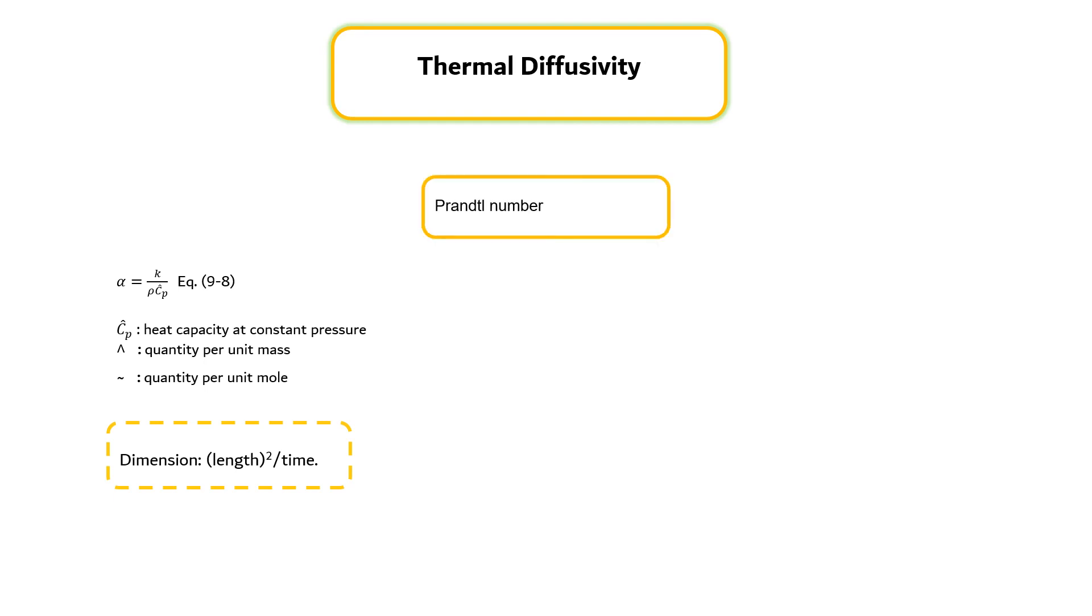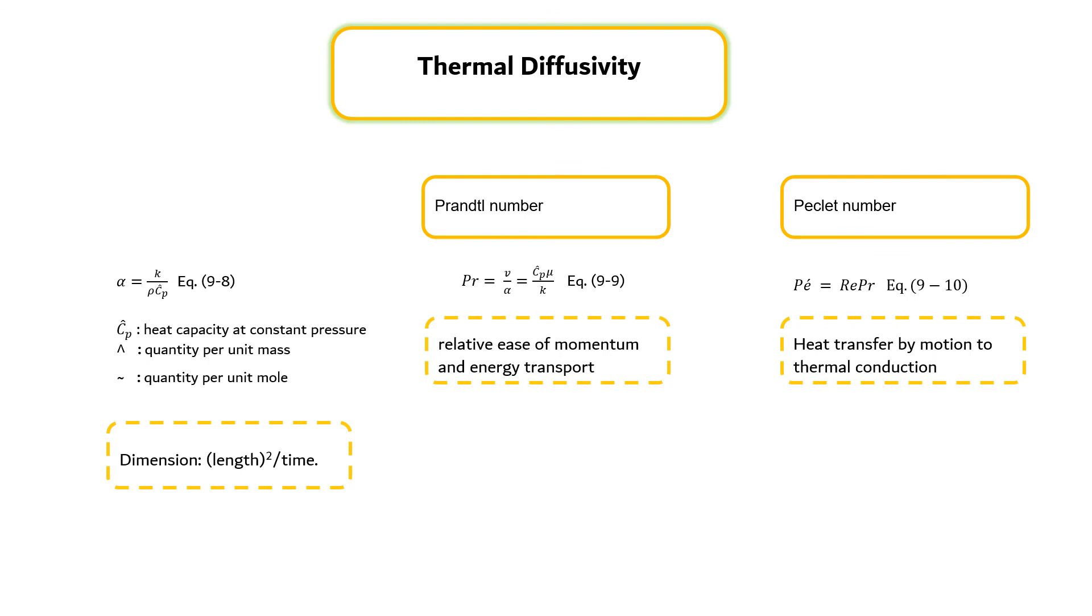Prandtl number is the ratio V and alpha, which indicates the relative ease of momentum and energy transport in flow systems and can be expressed as a dimensionless ratio as shown in equation 9.9. Another dimensionless group that is relevant when discussing heat transfer is the Peclet number, which can be calculated by equation 9.10. Peclet number represents the ratio of heat transfer by motion of fluid to heat transfer by thermal conduction.